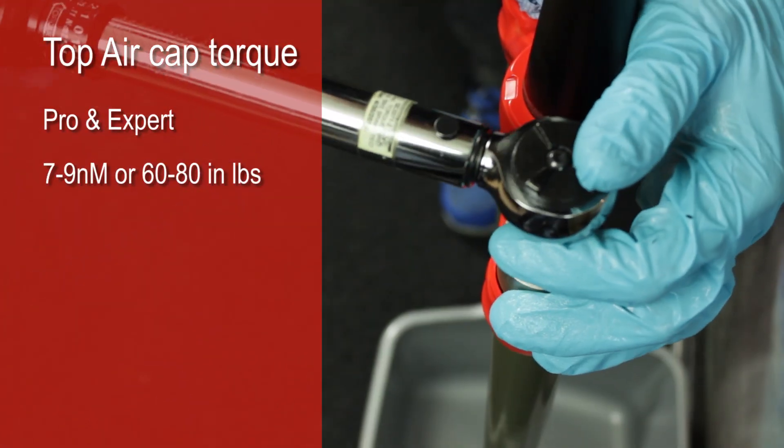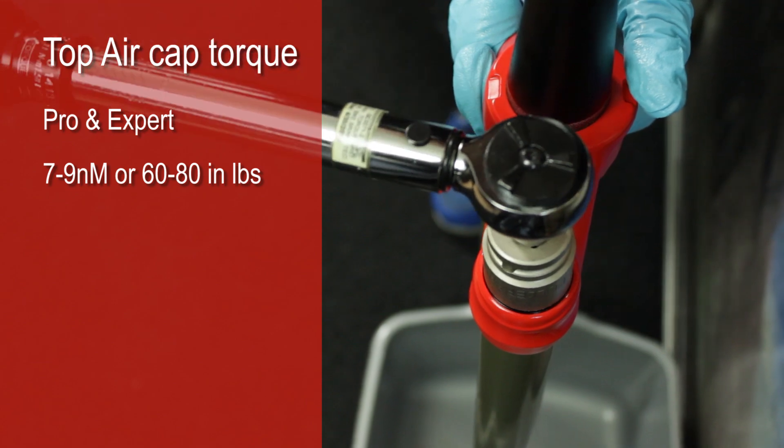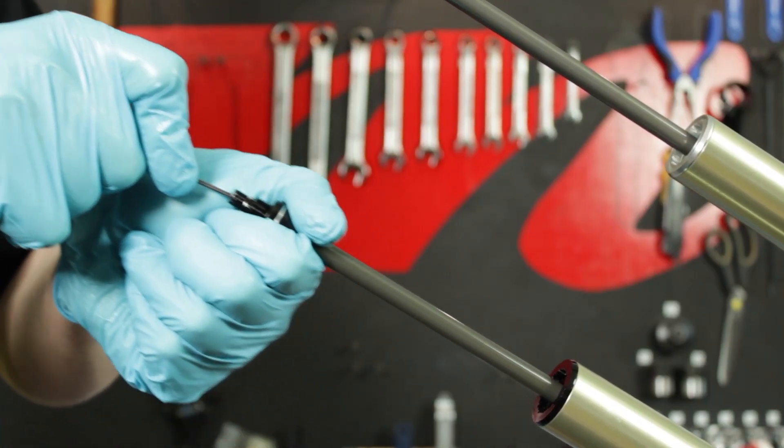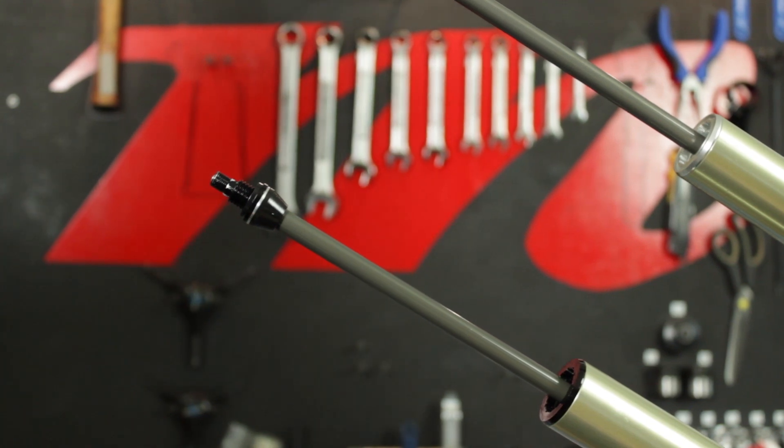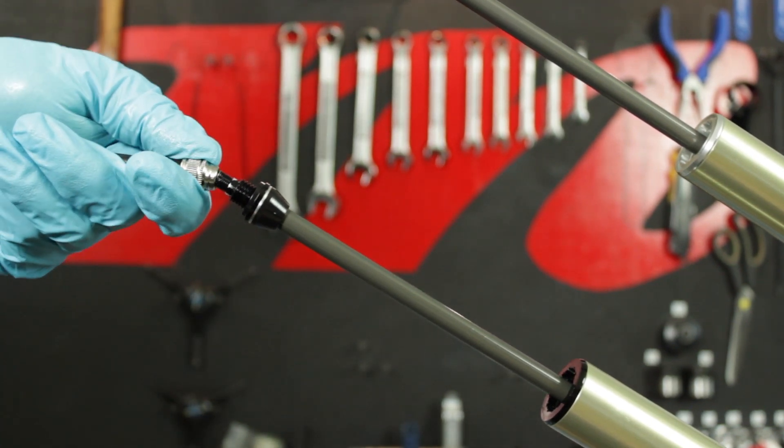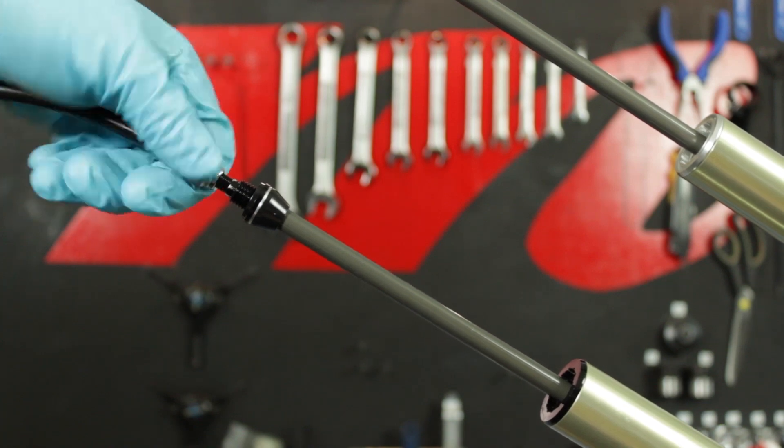Replace the top air cap of the Matic using a flat ground 24 millimeter socket at a torque of 7 to 9 newton meters or 60 to 80 inch pounds. Attach the shock pump, and with the air purge button depressed, fully extend the compression rod. Add 15 psi to the system to prevent it from moving while reinstalling the outer casting.